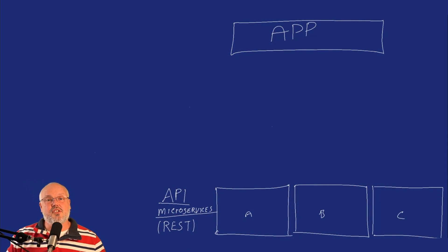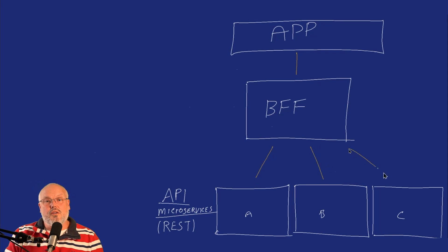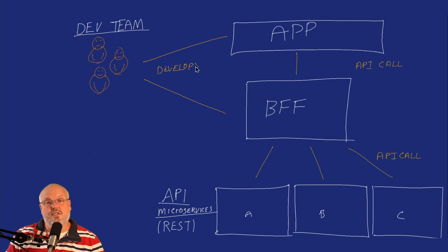I already covered in detail what a BFF is in a previous video. If you haven't watched it or you don't understand what a BFF is, I'd recommend that you watch that video — I'll leave a link in the corner. But for now, I'm going to summarize what a BFF is. A BFF is a custom API that sits on top of your microservices for a specific front-end. In this pattern, instead of the front-end application having to call all the various microservices, it just calls the BFF instead.